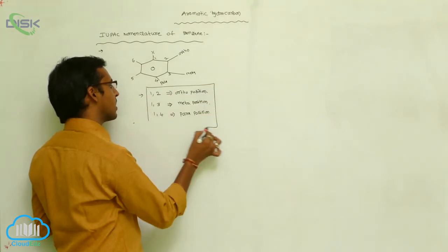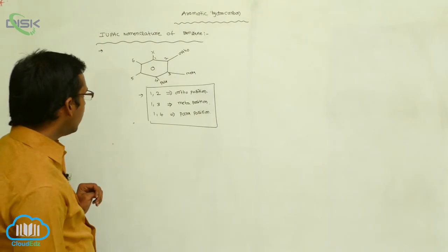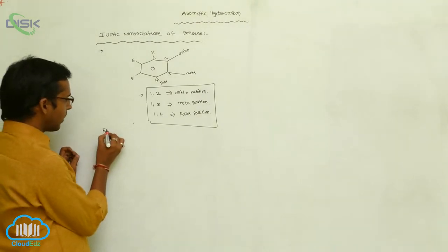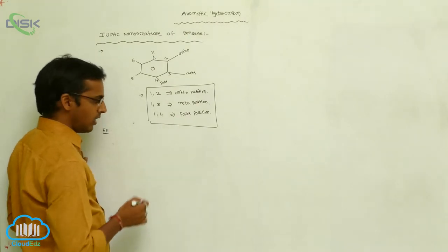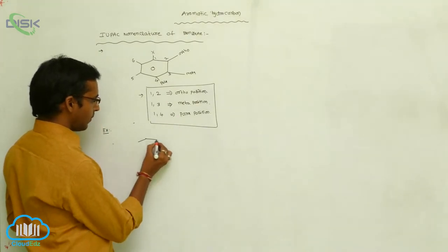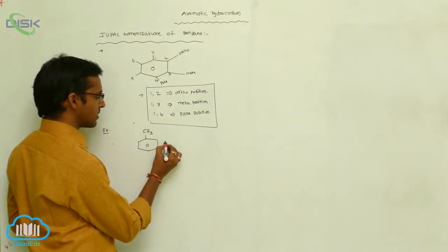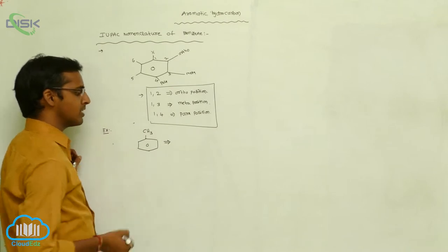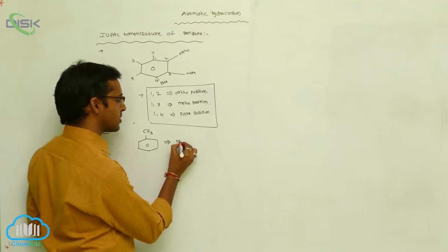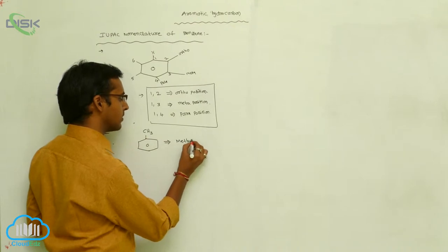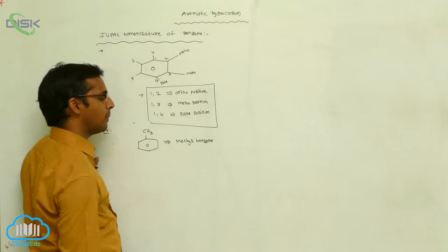So mainly 3 positions are there: ortho, meta, and para. Based on that, you write the position first, then the suffix is benzene. For example, if the alkyl group is present — if a methyl group is present — your parent is benzene, so the methyl group substituted at this position gives the name methylbenzene. Its IUPAC name is methylbenzene.